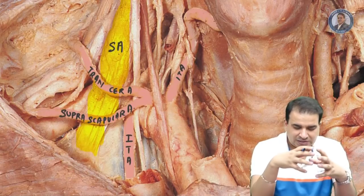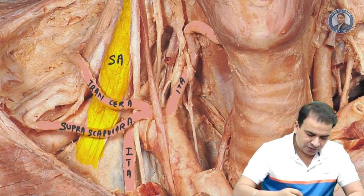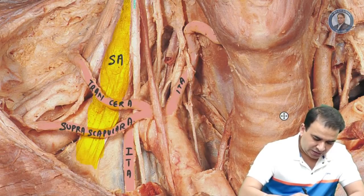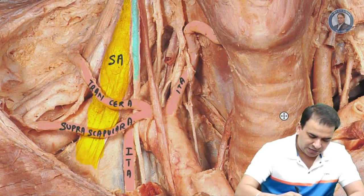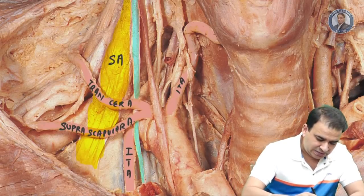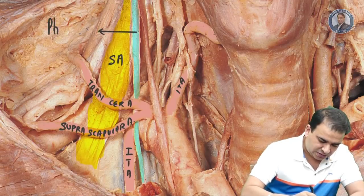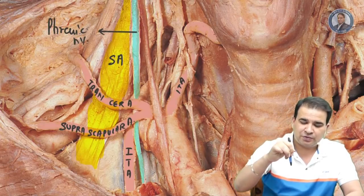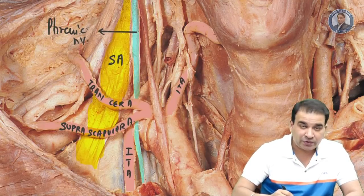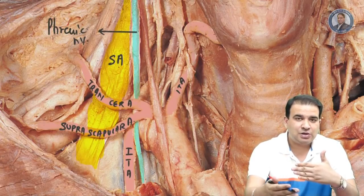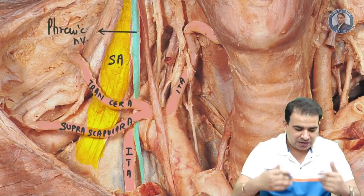Now for the important nerves and vessels in this region. There are two nerves seen in front of the scalenus anterior. The one present more laterally emerges from the lateral border of the scalenus anterior, then descends in front of the subclavian artery but behind the subclavian vein — that is the phrenic nerve. The phrenic nerve runs in front of the scalenus anterior but is actually behind the pre-vertebral fascia.